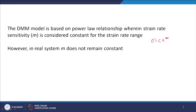As already discussed in the DMM model, stress is dependent on strain rate and there is a power law relationship. You can see that in this power law relationship M, the strain rate sensitivity, is supposed to be a constant. They have assumed that strain rate sensitivity will remain constant in the strain rate range where they are developing the model, and this kind of relationship is called power law behavior.